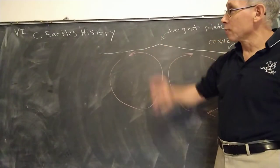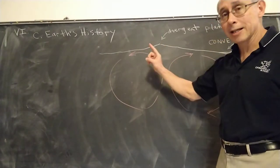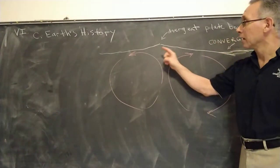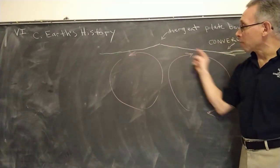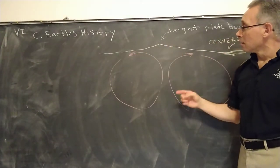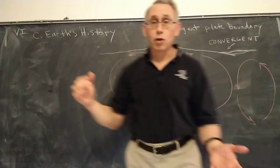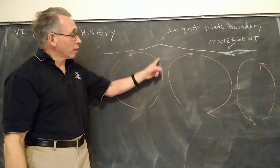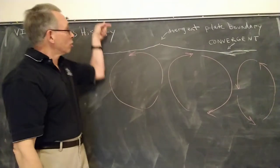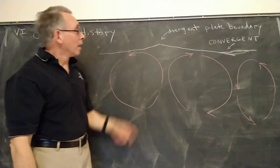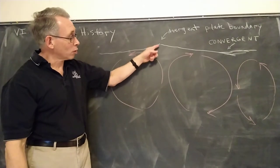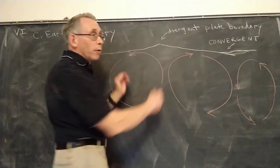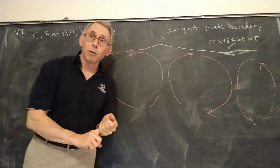At any rate, we are at capital C, Earth's history from the rock record. We last left with a diagram where I was explaining divergent plate boundaries, and in fact all different kinds of plate boundaries. We have an example here of the mid-ocean ridge, so the ocean level would be way up at the top, and there's a divergent boundary at the middle where the plates are being pulled apart.